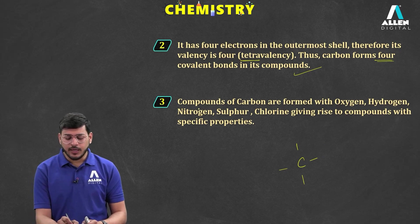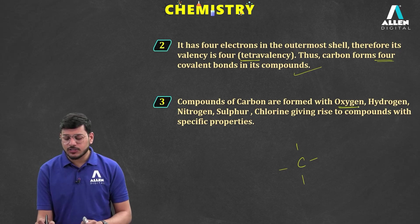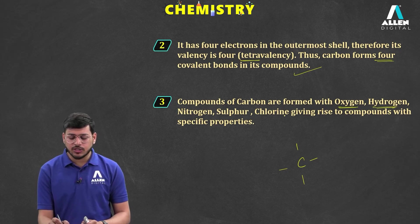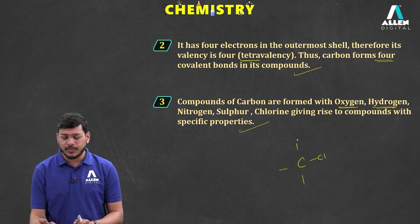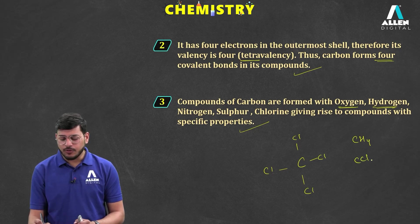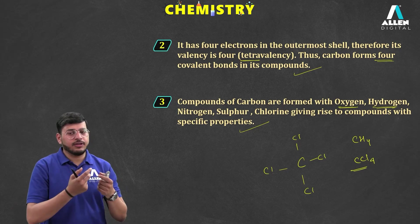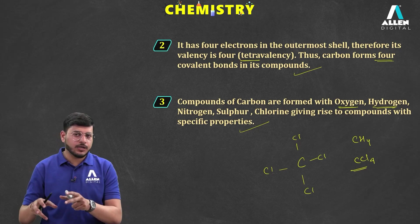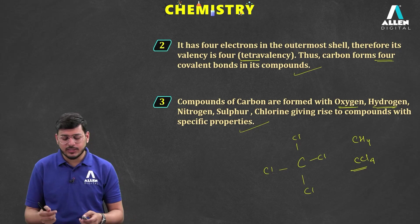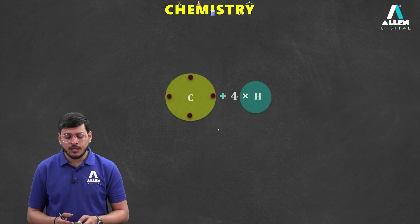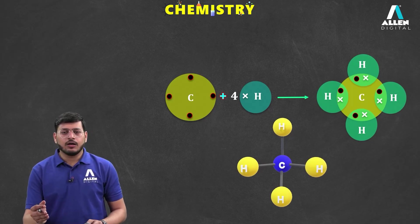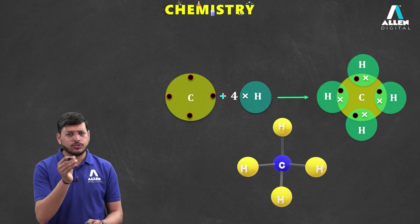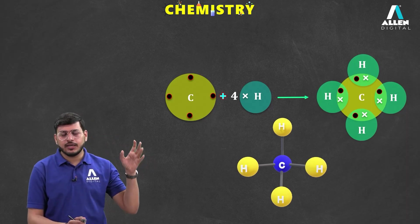Carbon can combine with oxygen, hydrogen, nitrogen, sulfur, and chlorine, giving rise to compounds with specific properties. For example, when carbon combines with four chlorine atoms, it forms CCl4 — carbon tetrachloride — a new compound with new properties. When carbon combines with four hydrogen atoms, it forms CH4, which is methane, by sharing one electron with each hydrogen atom through covalent bonding.